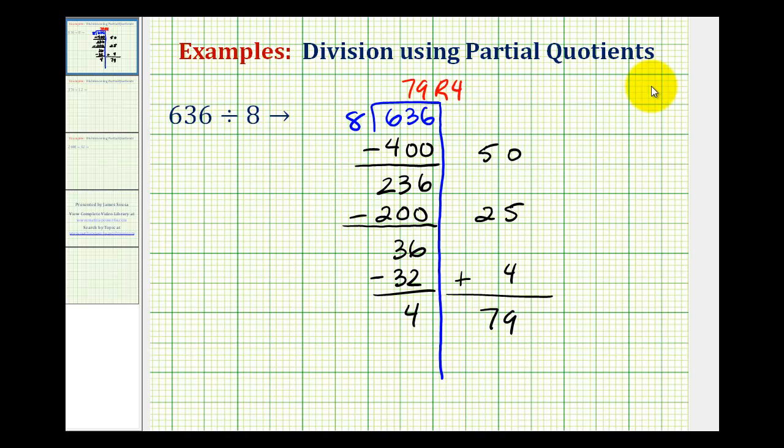Now you may be asked to express this quotient as a mixed number, so let's review that as well. The whole number would be 79, and the fraction is formed by putting the remainder over the divisor. So in this case, we'd have 79 and 4 eighths. But 4 eighths does simplify. These both have a common factor of 4, so the simplified mixed number would be 79 and 1 half. So depending on what class you're in, you may be asked to express the quotient in this form or this form.